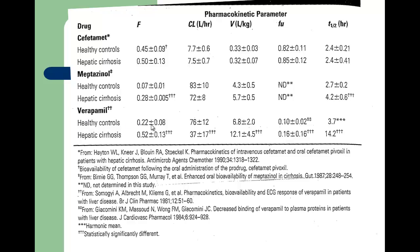For Verapamil, normally we have about 22% bioavailable — again suspicious of high extraction. And it more than doubled in cirrhosis — a big difference in bioavailability. There's also a big decrease in clearance, and again this is a high extraction drug because the healthy patient has a very high clearance. The volume is much larger, and this is a highly bound drug to albumin and AAG. So we know there's an increase in volume and a decrease in clearance — we'd expect a big change in half-life, which we do see, and an increase in bioavailability. Both Metazinol and Verapamil are likely high extraction drugs; if given orally, we need to be very concerned about decreasing dose rates and increasing dose intervals.